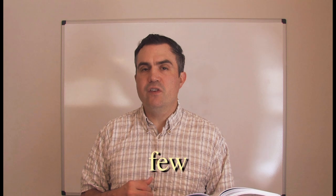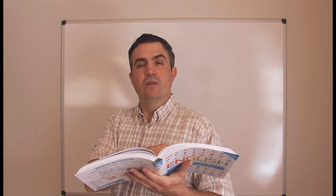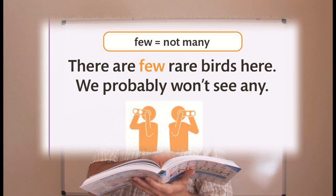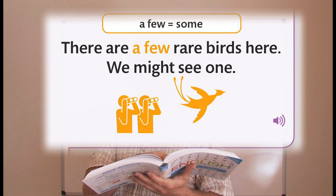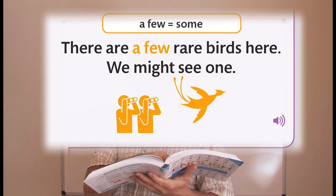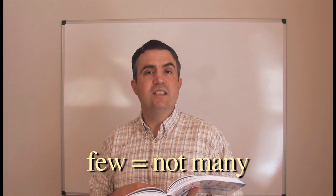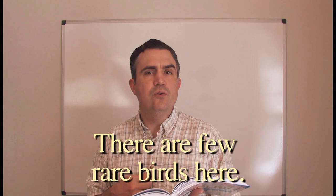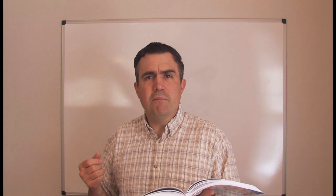Let's talk about few. Few is for small numbers that we can count. There are few rare birds here. We probably won't see any. There are a few rare birds here. We might see one. So using few, few means not many. Listen to the intonation. There are few rare birds here. It has a negative connotation, right? Few. Not many.